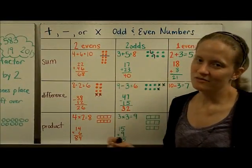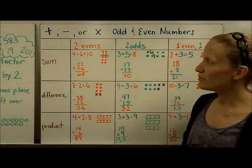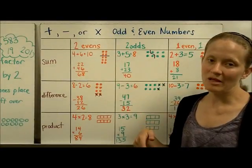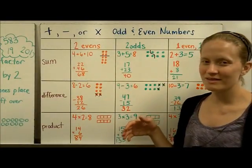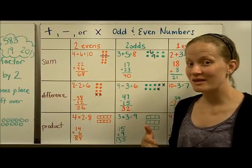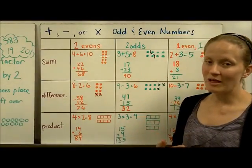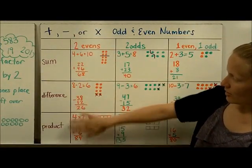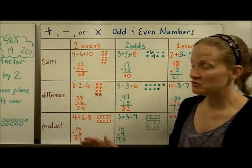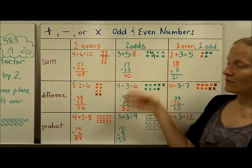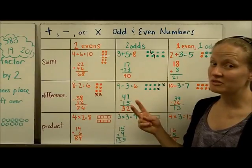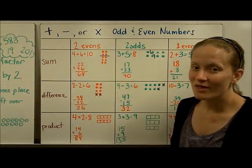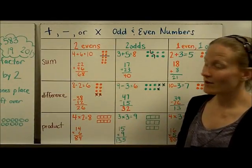One of the main reasons we're studying this in fourth grade is to find patterns when you take odd and even numbers and add, subtract, or multiply them. I've created a chart to help us organize those patterns. One column covers two even numbers, another covers two odd numbers, and a third covers one of each. We'll go through each one and determine whether the result is odd or even.